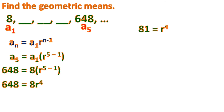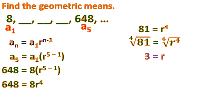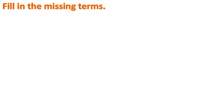Since r has an exponent of 4, we take the fourth root of both sides. The fourth root of r to the 4th is just r. The fourth root of 81 is 3, because 3 to the power of 4 equals 81, or 3 times 3 times 3 times 3 equals 81. So r equals 3. Now we can find the geometric means: 8 times 3 is 24, 24 times 3 is 72, and 72 times 3 is 216. Those are the three geometric means.